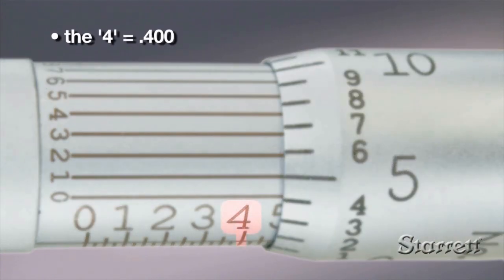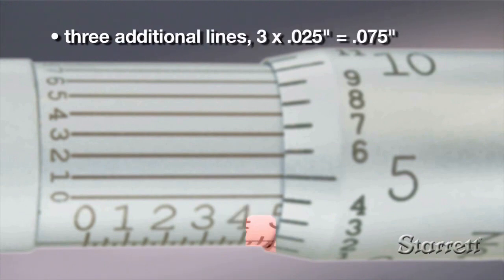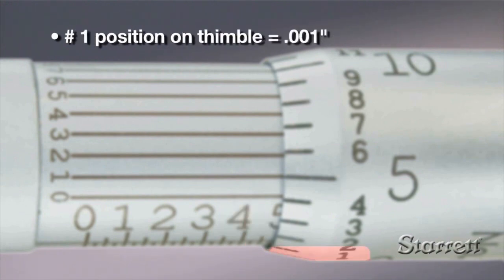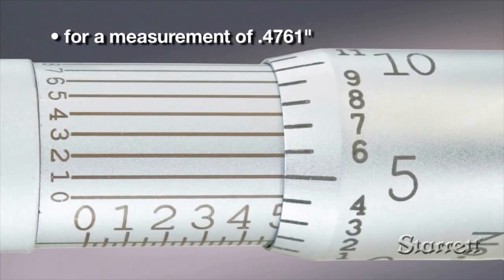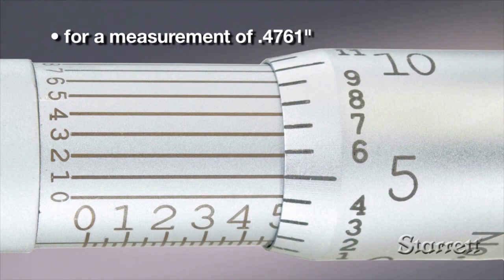Many micrometers can measure to a ten thousandth of an inch. Horizontal lines above the sleeve scale work with the lines on the thimble as a vernier scale. In this example, the line on the vernier scale that most closely aligns with a line on the sleeve is one. So the value is point four seven six one of an inch.